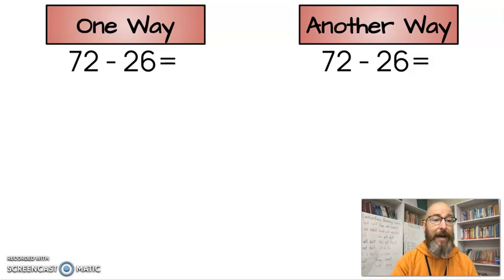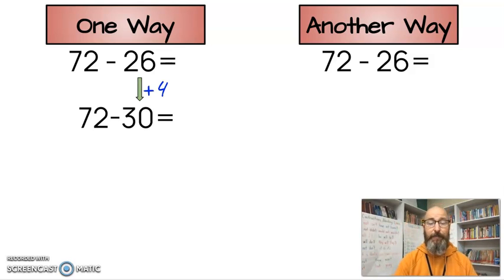So we're going to add to that to create a 30. And to add to that, we're going to add 26, 27, 28, 29, 30. We're going to add 4. So when we add 4 to that, it changes that 26 into a 30.